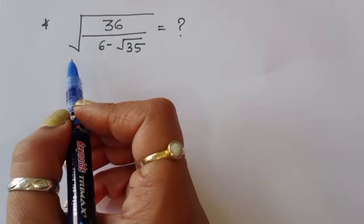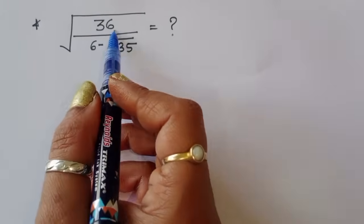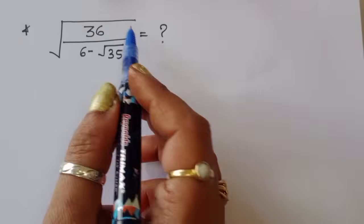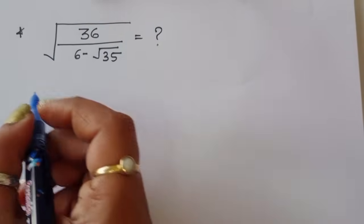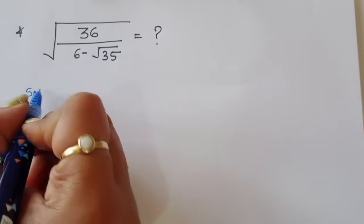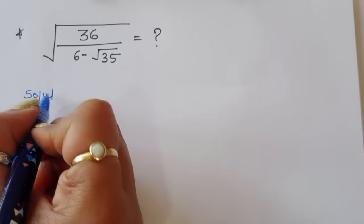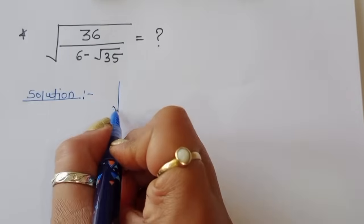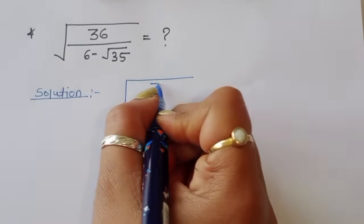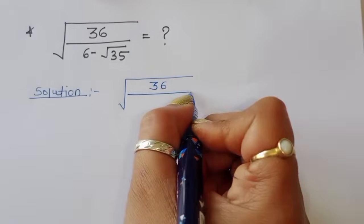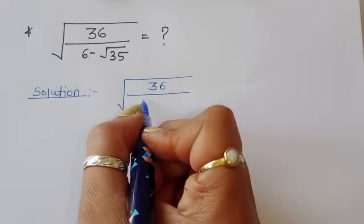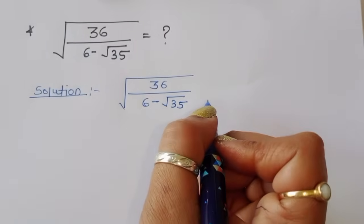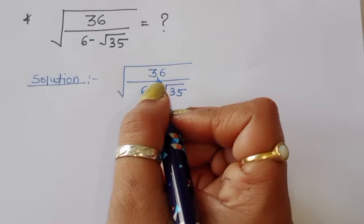The question is: given the square root of 36 divided by 6 minus square root of 35, we have to find out the value of this term. Let's see the solution.